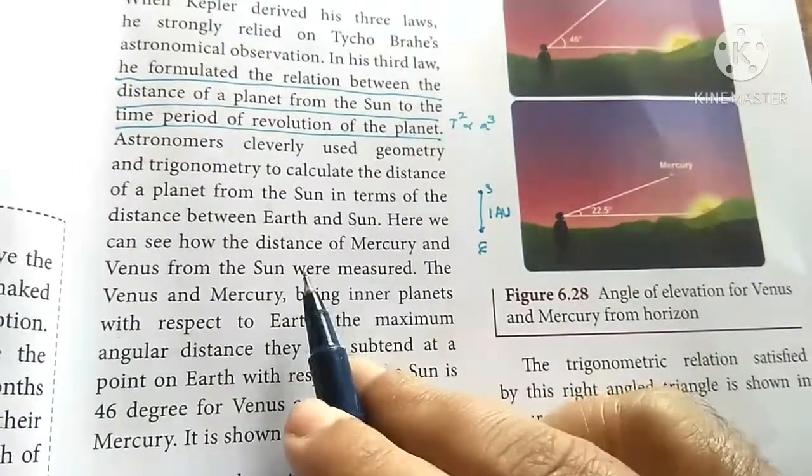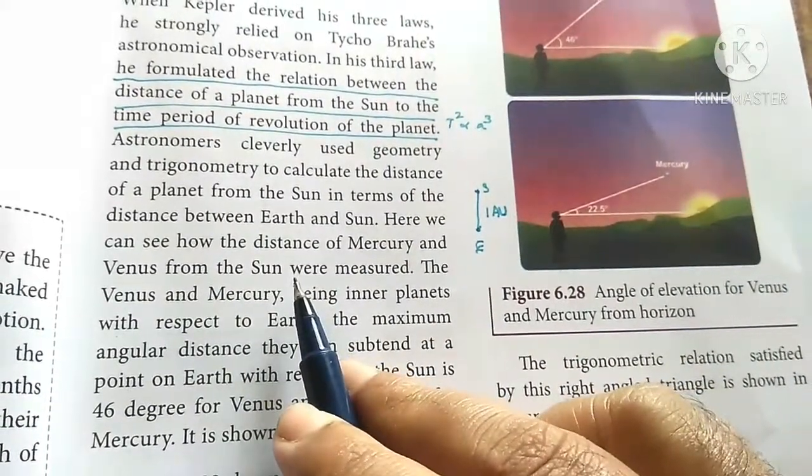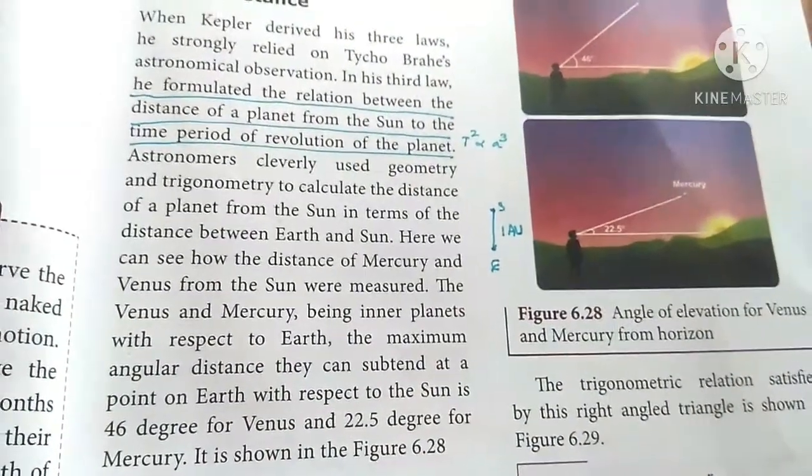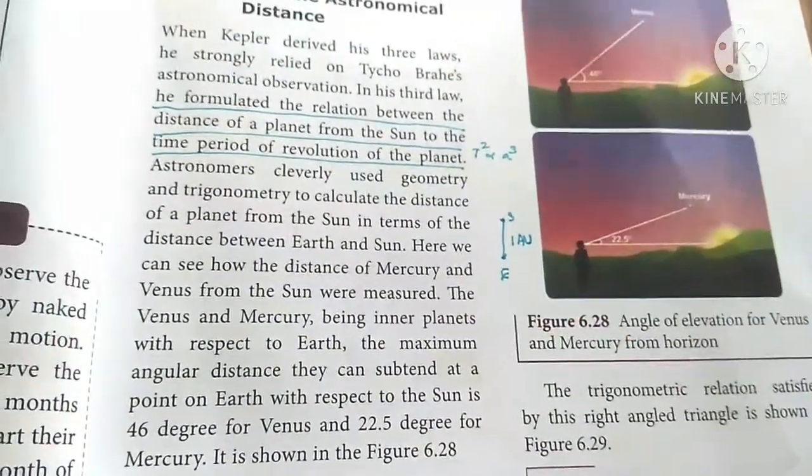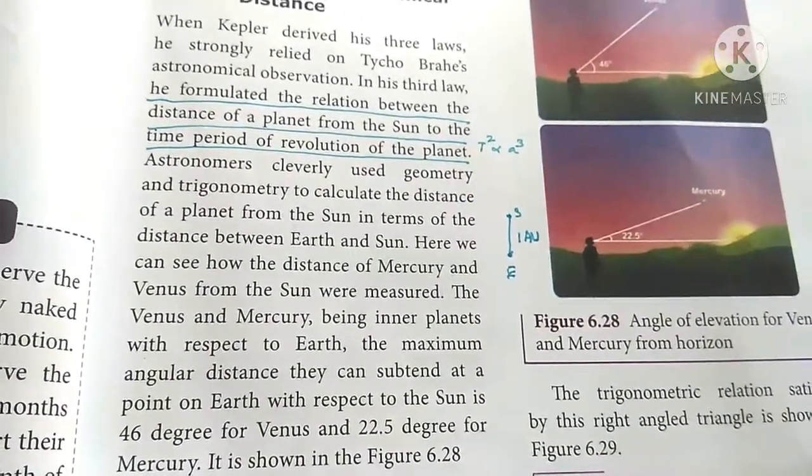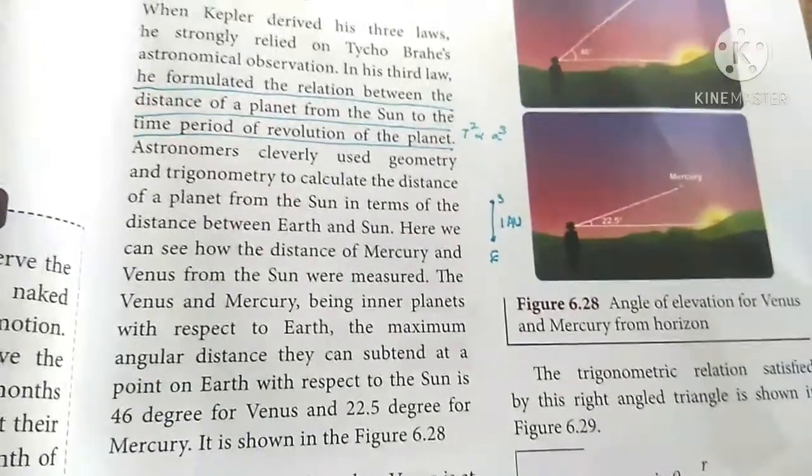Here we can see Mercury and Venus, two distances. How can we measure? The distances from sun to Venus and Mercury are measured by simple geometry.